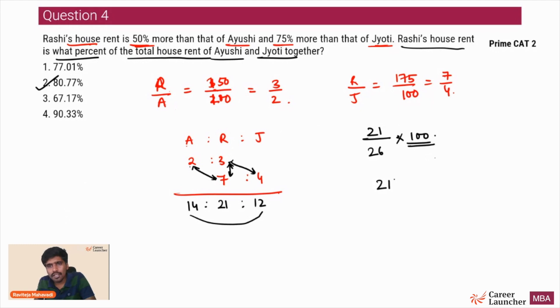For those of you who are not sure, you can just do a simple calculation: 2100 upon 26. It will take 20 seconds extra but you will get to the correct answer and just 20 seconds is worth its weight. So 26 8s are 208, and you have a 20 left. So 80 point something. So 80.77 is the only option that satisfies the approximation that we are looking for.